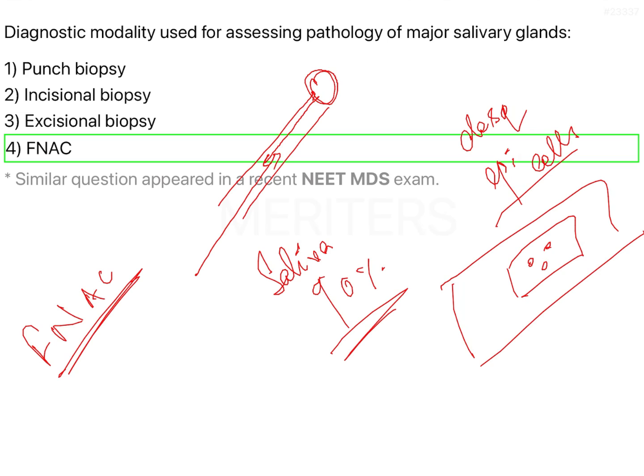Excisional biopsy is done primarily when the lesion is less than 1 or 2 cm in size — you remove the entire tissue and send it for biopsy. Incisional biopsy is when it is greater than 2 cm in size; you take a small portion of the tissue and send it for biopsy.